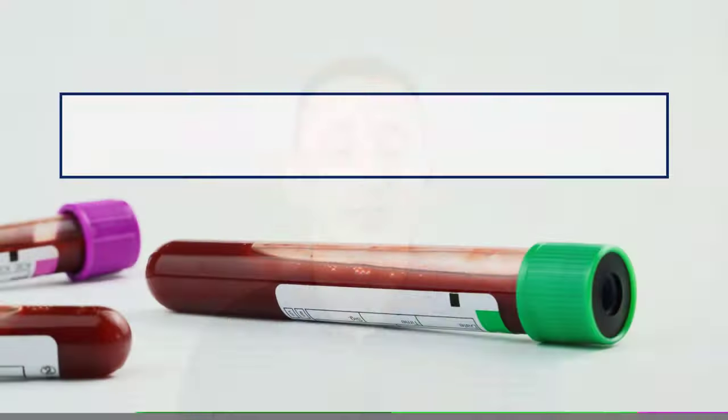But in some places, especially in American literature, you will find CRP expressed in milligrams per deciliter. Something that is 5 milligrams per liter is only 0.5 milligrams per deciliter — quite a difference, tenfold. So always pay attention to units of measurement when you read about CRP.